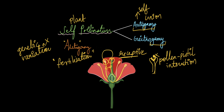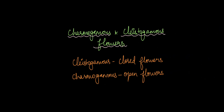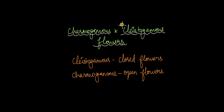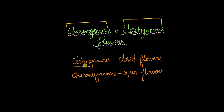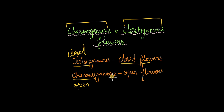Autogamous flowers have evolved a mechanism to ensure some genetic variation: they produce two types of flowers within the same plant. One is chasmogamous flowers and the other is cleistogamous flowers. Cleistogamous comes from the Greek word meaning 'closed,' while chasmogamous means 'open.' So cleistogamous flowers are closed flowers and chasmogamous flowers are open flowers.